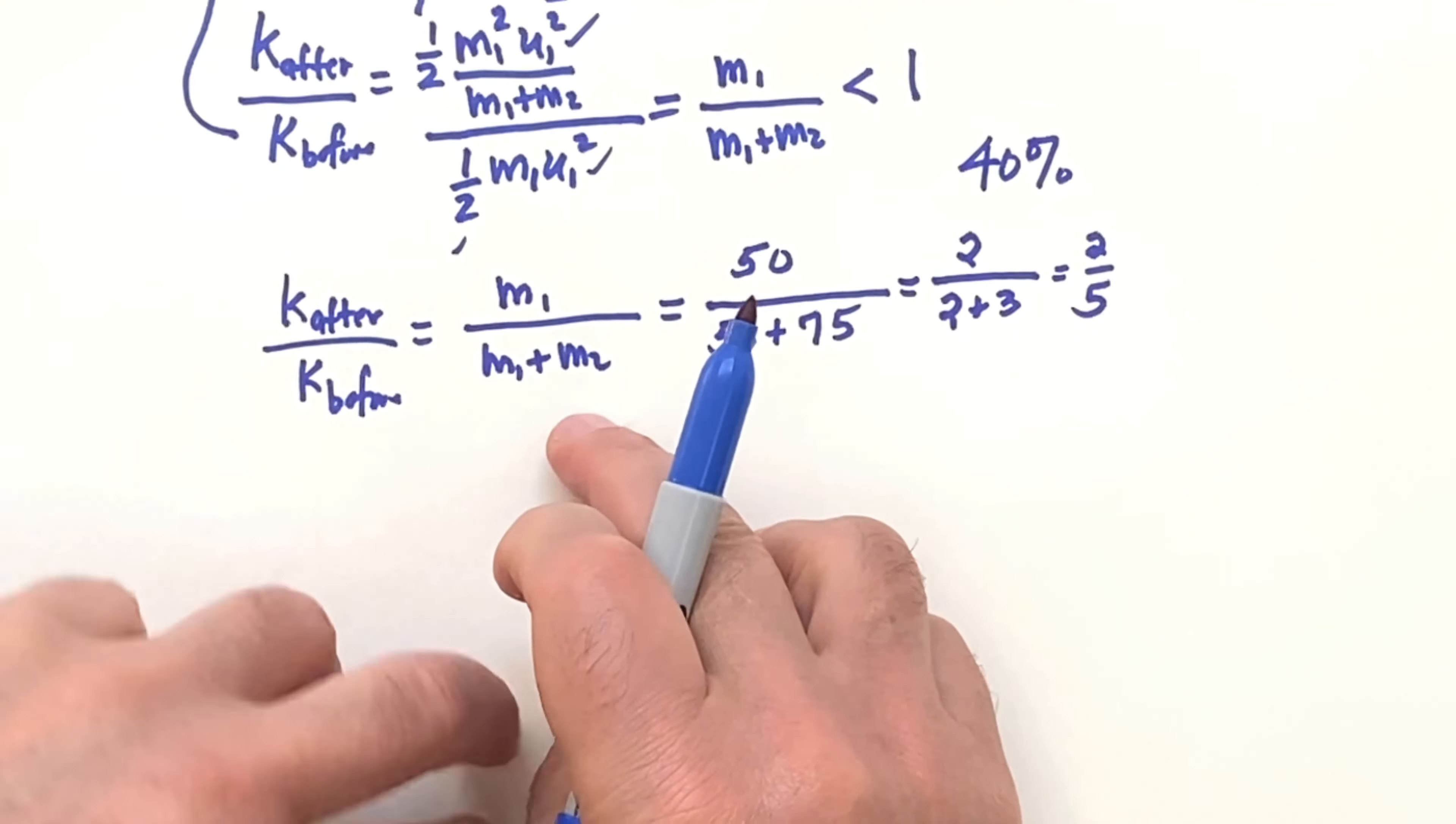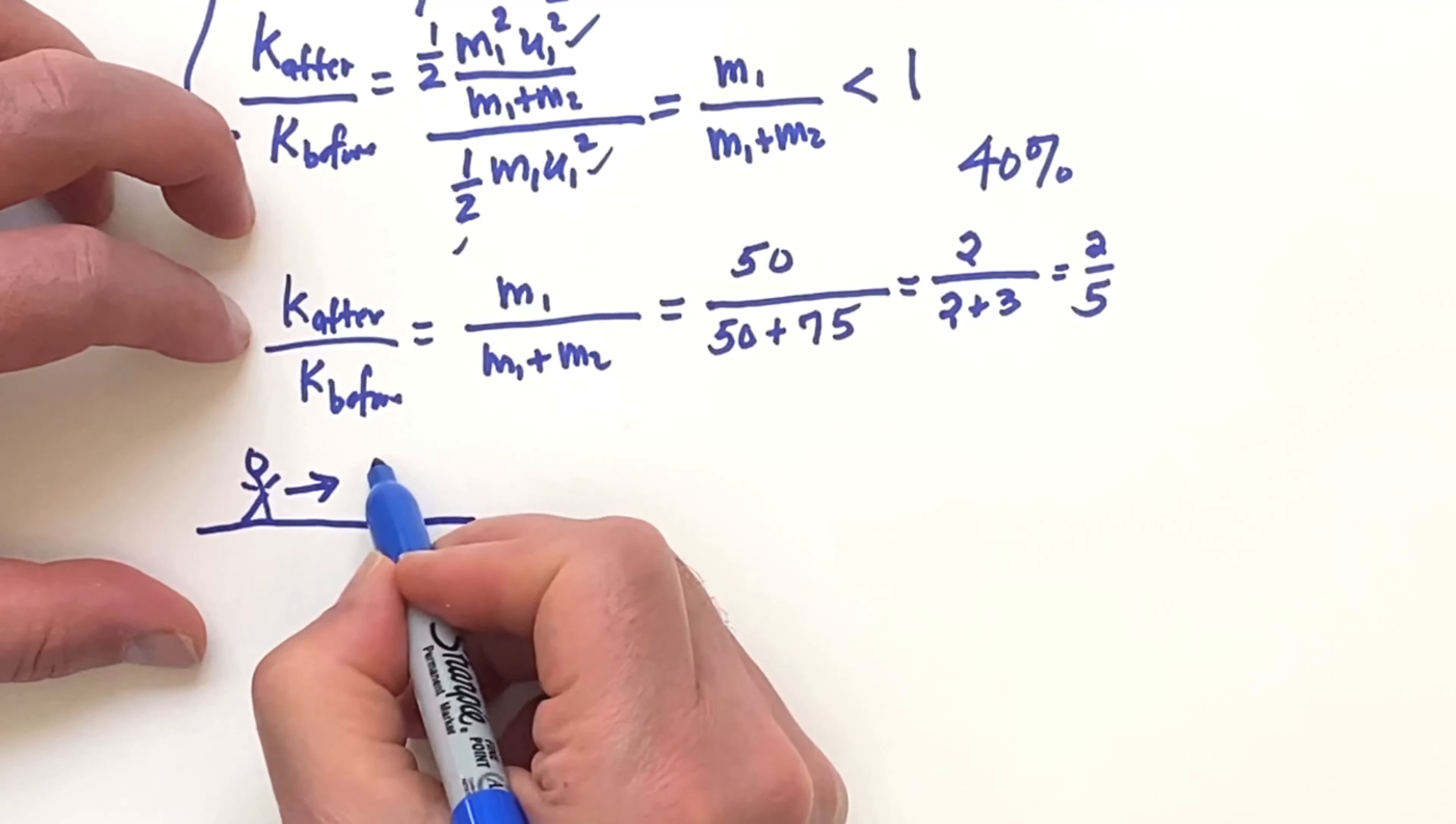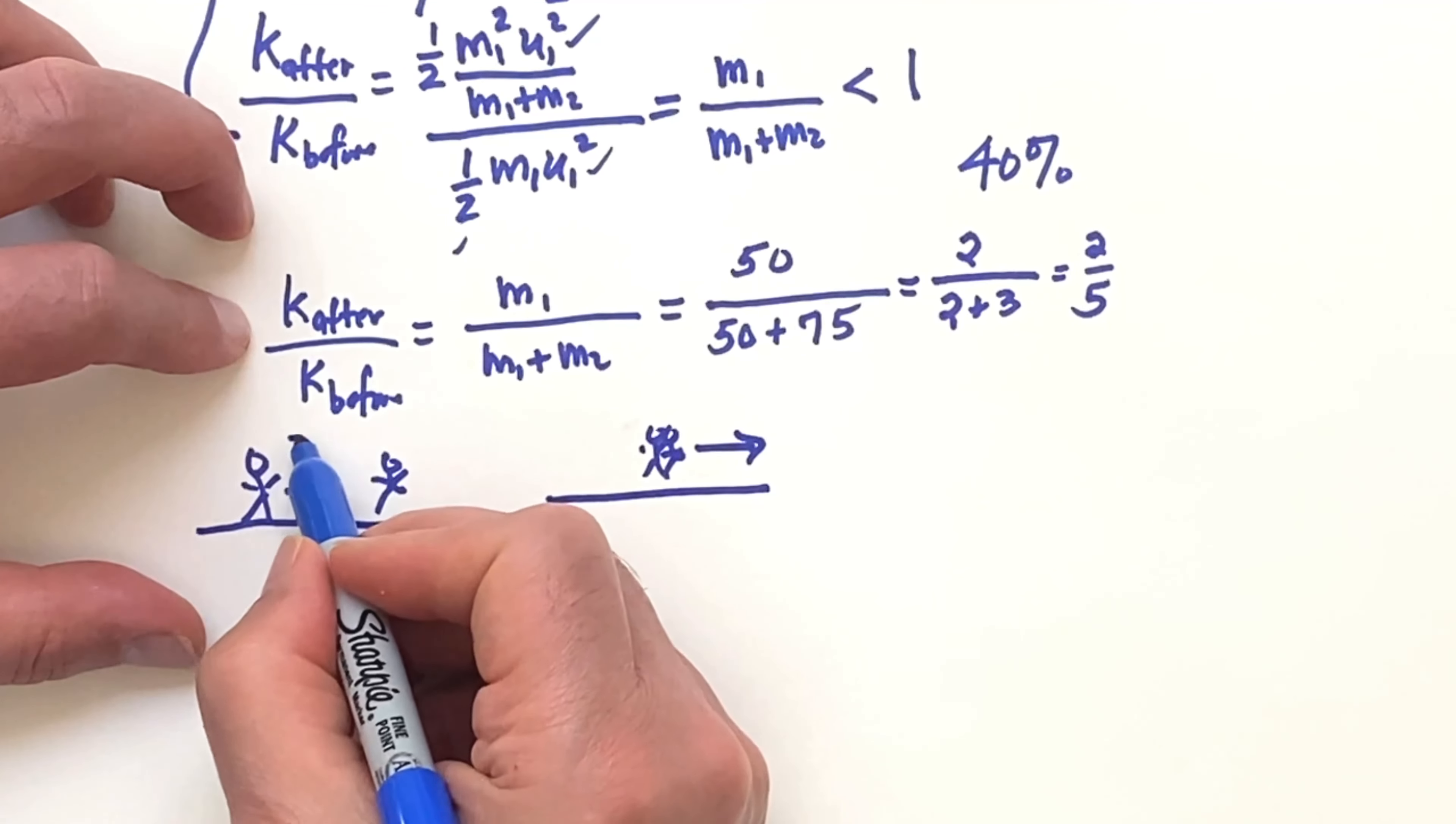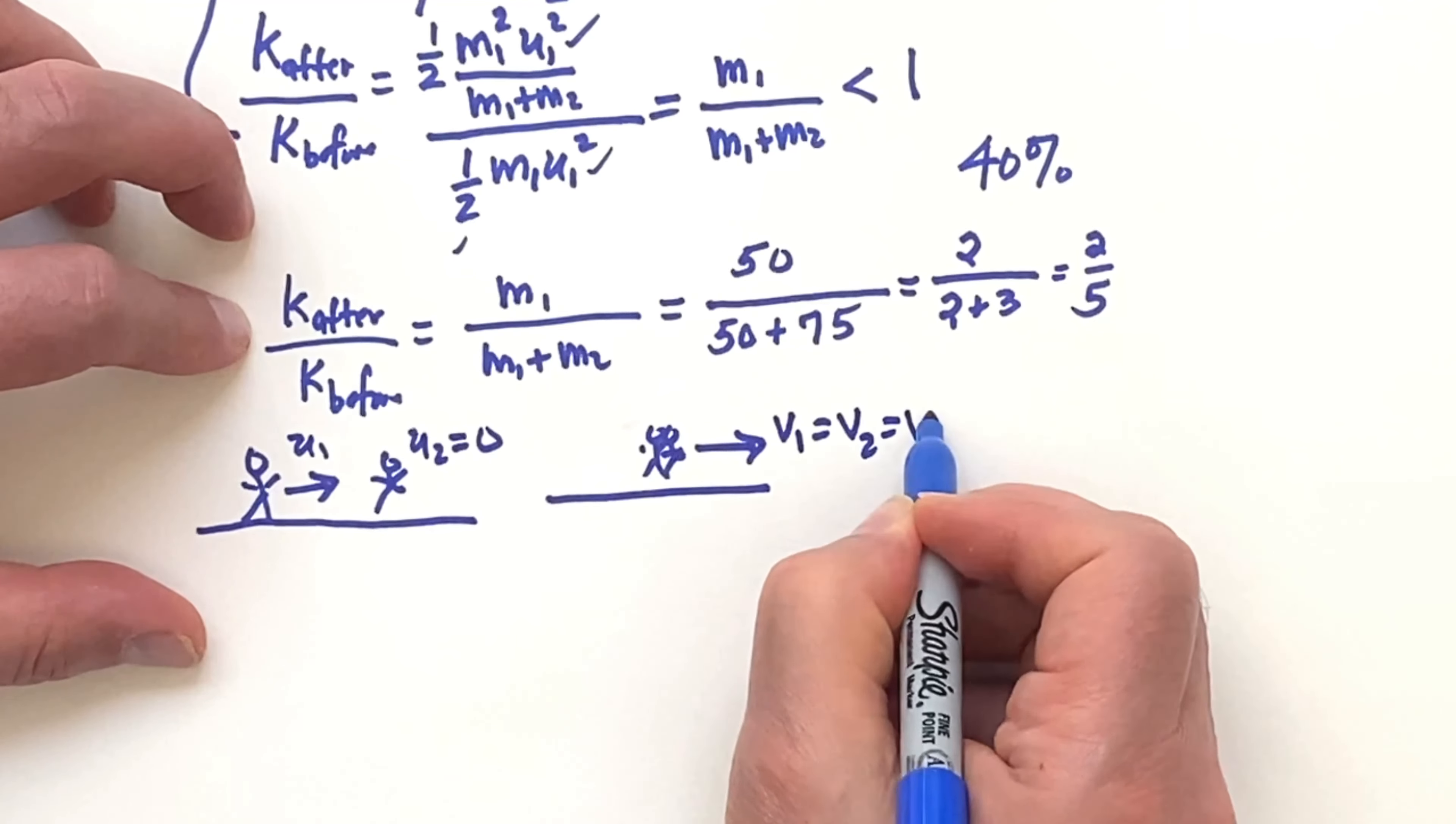Now let's check this formula with some extreme cases. Remember in our problem we have someone coming in from the left, this is before. And then afterwards, you have both moving together. This is U1 coming in, here U2 is 0. And then here, the final velocities V1 and V2 equal to V.